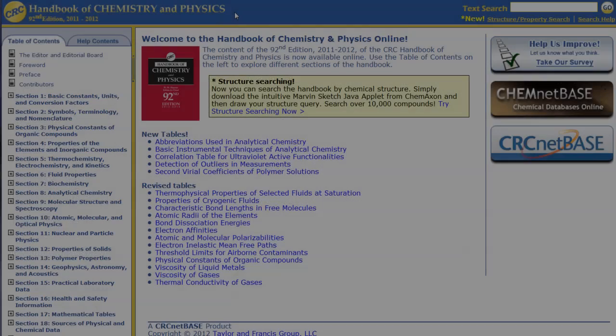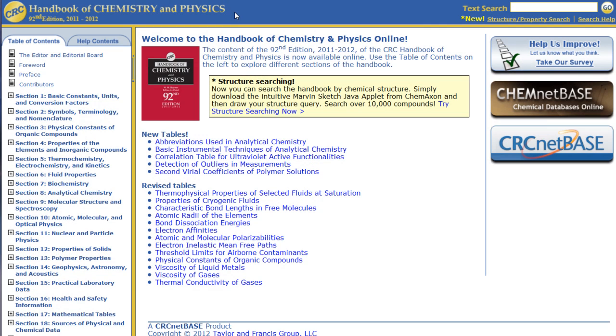The CRC Handbook of Chemistry and Physics contains information about the chemical and physical properties of organic and inorganic substances, their structures and compositions, and much more.